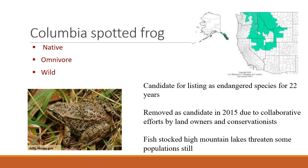An interesting amphibian that occurs on rangelands is the Columbia spotted frog. It's native, wild, and an omnivore. It was petitioned for listing under the Endangered Species Act for nearly 22 years on and off, and then it was removed as a candidate in 2015, largely in collaboration with landowners and conservationists who developed ponds and protected wetlands — oftentimes stock tanks and other things. It's apparent that Columbia spotted frogs and cattle and ranching can live in harmony with each other.